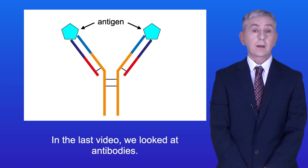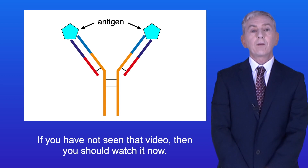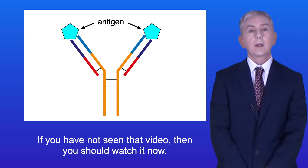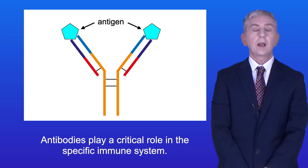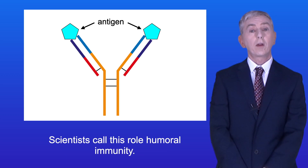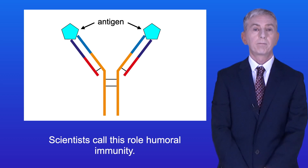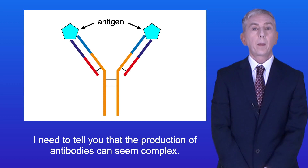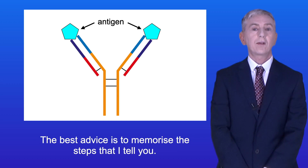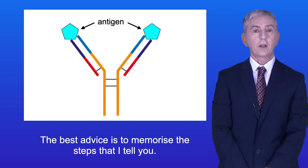In the last video we looked at antibodies and if you haven't seen that video then you should watch it now. Antibodies play a critical role in the specific immune system and scientists call this role humoral immunity. Now I need to tell you that the production of antibodies can seem complex. The best advice is to memorize the steps that I tell you.